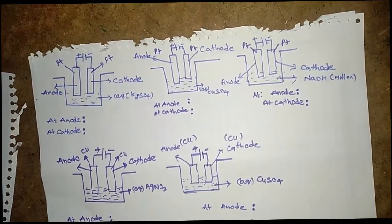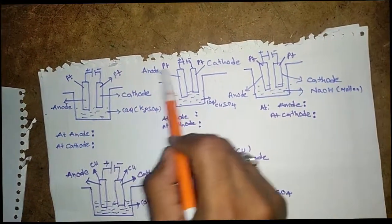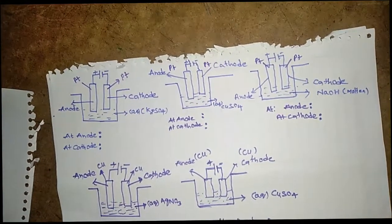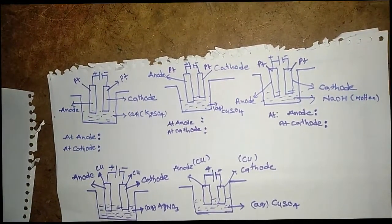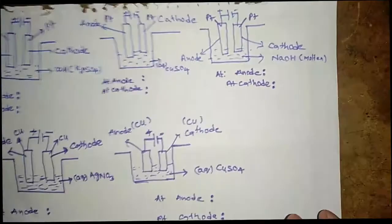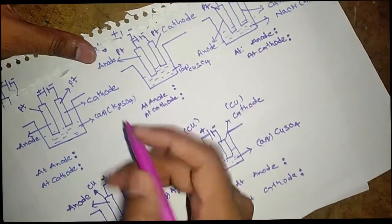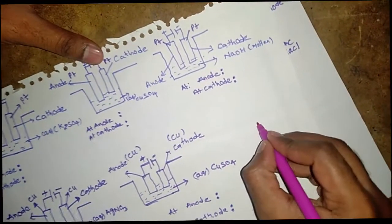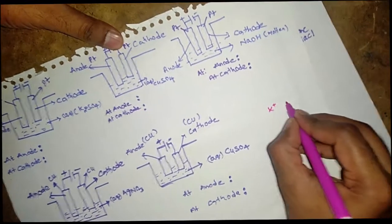Now I am taking three cells with inert electrodes — platinum in each case. In these cells we have aqueous potassium sulfate. Potassium sulfate dissociates into K⁺ and SO₄²⁻, and water dissociates into H⁺ and OH⁻.